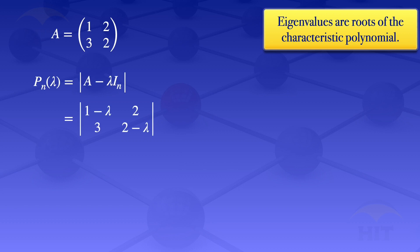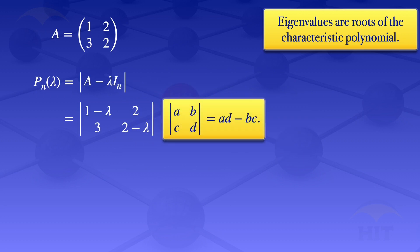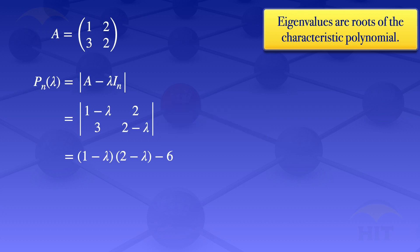To evaluate that determinant, we know that the determinant of a 2 by 2 matrix [A, B; C, D] equals A·D minus B·C. So that determinant will be (1 minus lambda) multiplied by (2 minus lambda) minus 6, which we can simplify to lambda squared minus 3 lambda minus 4.